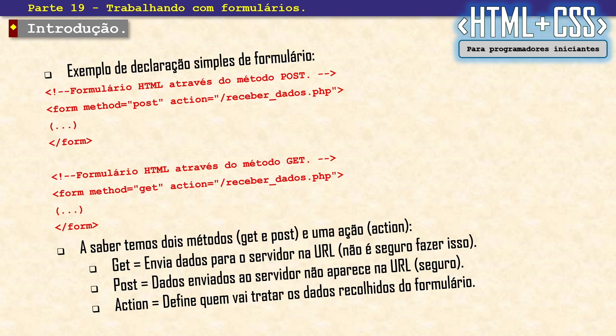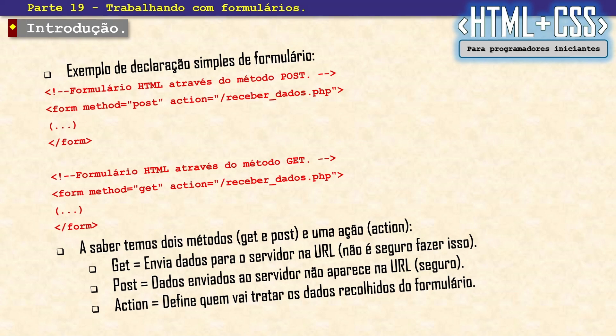O método POST — os dados enviados ao servidor não aparecem na URL. Quem vai tratar os dados do formulário, nesse exemplo, seria o arquivo receberdados.php, e ele não vai aparecer tratando esses dados. É mais seguro. O ACTION define quem vai tratar os dados recolhidos do formulário — no nosso exemplo é o arquivo receberdados.php, que vai ter uma programação em PHP, vai ler todo o meu formulário e de acordo com a programação vai tomar uma decisão.